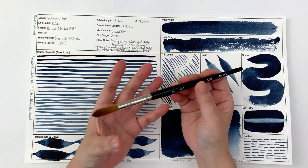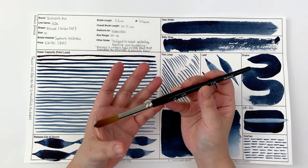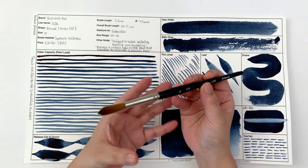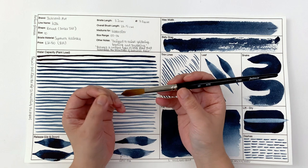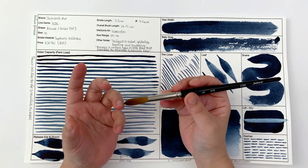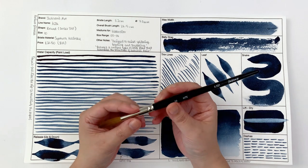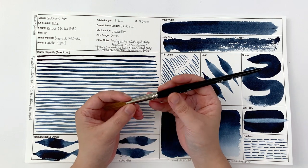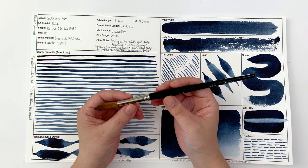This is a round size 10 brush, series number 561, and it is a synthetic kolinsky. So it's a synthetic fiber, friendly for vegans, that is supposed to mimic kolinsky. The promo says designed to resist splitting, bending, and shedding, features a unique type of stiff fiber that resembles the structure of natural hair.